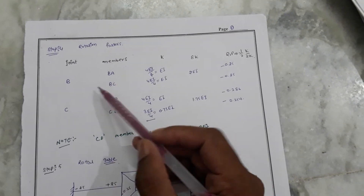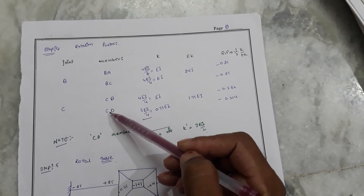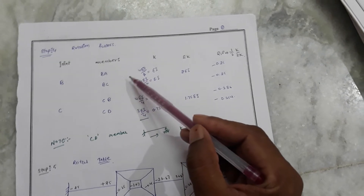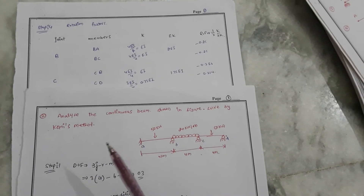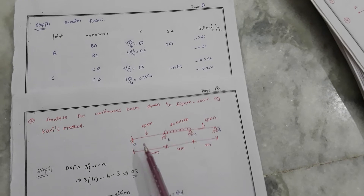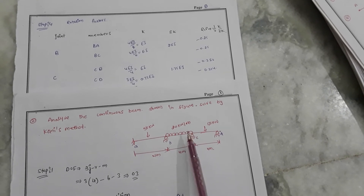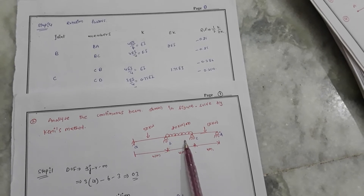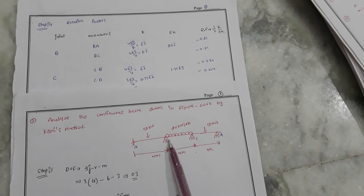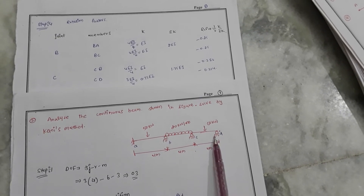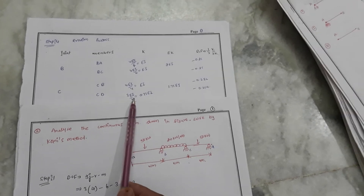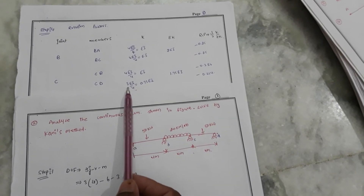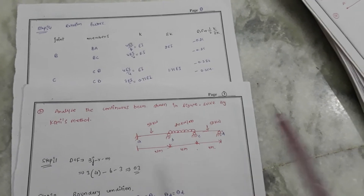Next step: we need to find the rotation factors for B-to-A, B-to-C, C-to-B, and C-to-D. For B-to-A, it is a fixed support, so the stiffness is 4EI/L. For B-to-C, it is internally fixed, also 4EI/L. For C-to-B, also fixed internally, so 4EI/L. For C-to-D, it is a roller support, so we take the modified stiffness factor of 3EI/L.